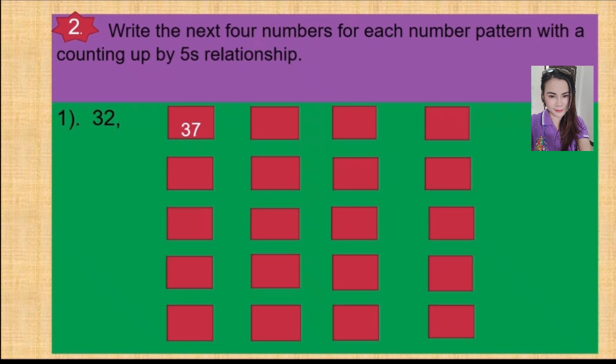And from 37, counted up by 5 — count it by yourself — equals 42. Okay, you get the same answer, very good! From 42 counted up by 5 equals 47. And from 47 counted up by 5: 48, 49, 50, 51, 52. Very good!